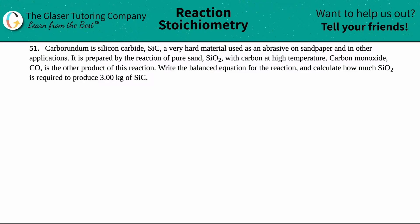Number 51. Carborundum is silicon carbide, which is SiC, a very hard metal used as an abrasive on sandpaper and in other applications. It is prepared by the reaction of pure sand, which is SiO2, with carbon at high temperature. Carbon monoxide, CO, is the other product of this reaction. Write the balanced equation for the reaction and calculate how much SiO2 is required to produce three kilograms of SiC.